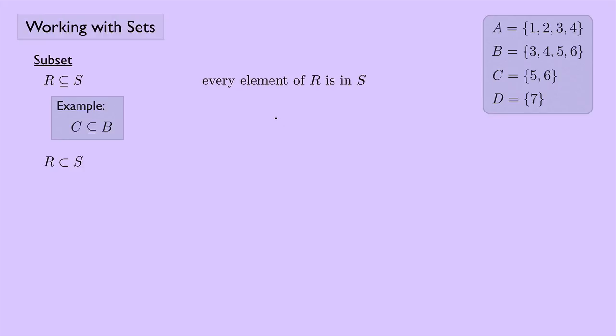We could also write R as a subset of S without the little bar on the bottom and that just means that R is a subset of S but R is not equal to S. This only makes sense when we're talking about abstract sets R and S where we don't actually know the elements.